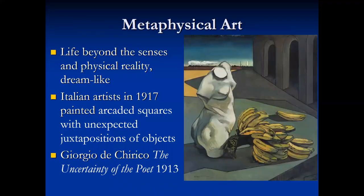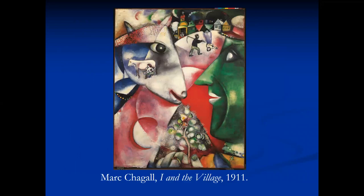Metaphysical art was an art movement that depicted images of life beyond the senses and physical reality with dreamlike qualities. In 1917, Italian artists De Chirico and Carrà painted arcaded squares with unexpected juxtapositions of objects like in this painting of the torso of a statue and bunches of bananas. Marc Chagall's 1911 I and the Village shows a dreamlike view of his Russian village centering around a goat-like animal and a man whose eyes are linked by a thin black line, showing the interconnectedness of the villagers and the animals living side by side.